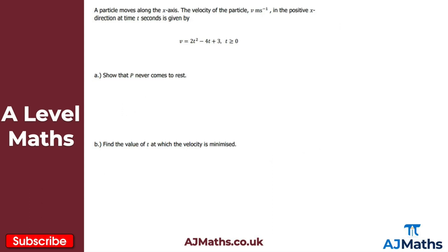Looking at one more question: a particle moves along the x-axis, and the velocity v meters per second is given by another quadratic. For part a, we have to show that the particle p never comes to rest. P comes to rest when v equals zero, so we need 2t² minus 4t plus 3 equals zero. If p never comes to rest, there are no real solutions to this quadratic.